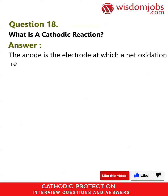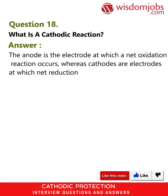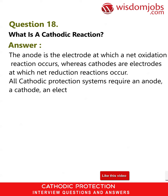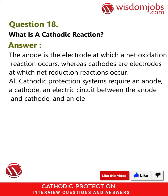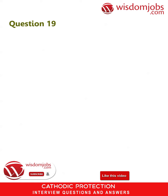Question 18: What is a cathodic reaction? Answer: The anode is the electrode at which a net oxidation reaction occurs, whereas cathodes are electrodes at which net reduction reactions occur. All cathodic protection systems require an anode, a cathode, an electric circuit between the anode and cathode, and an electrolyte.